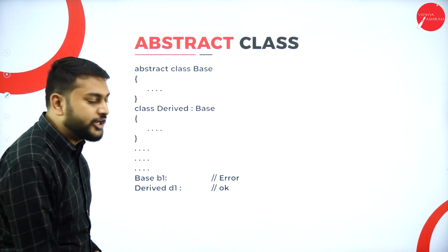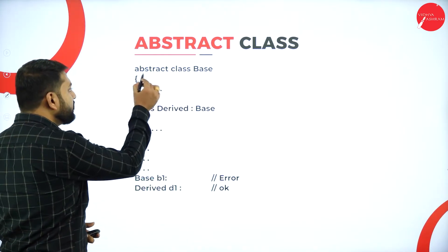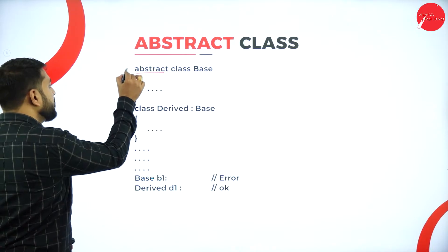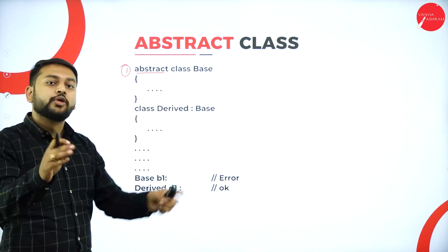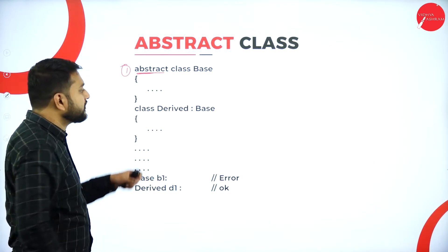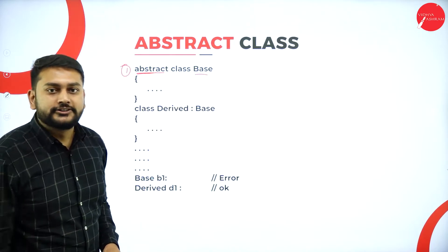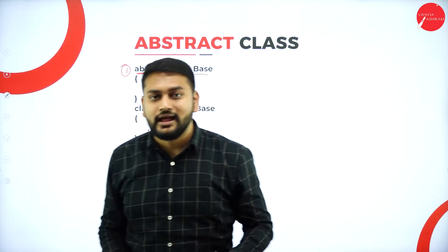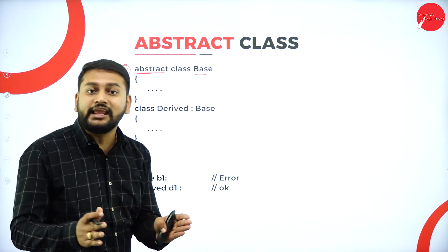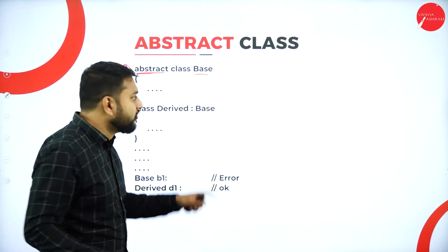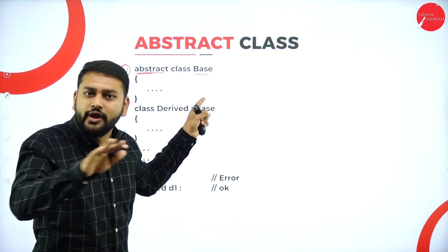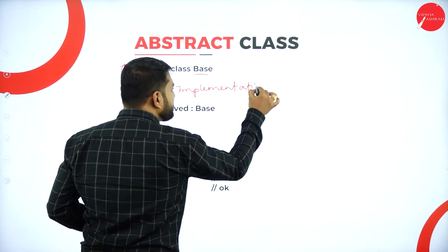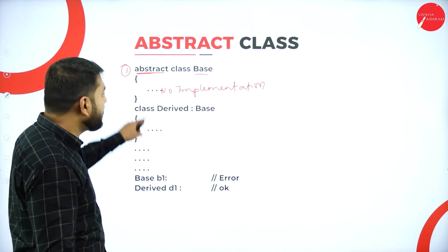How do I make any class abstract? The first thing to remember is that you need to use the keyword abstract before the keyword class. That is point number one. When you use the keyword abstract before class, you are making that class a base abstract class. The speciality of an abstract class is that it does not contain any implementation — you will not write any code for it. There will be no implementation.